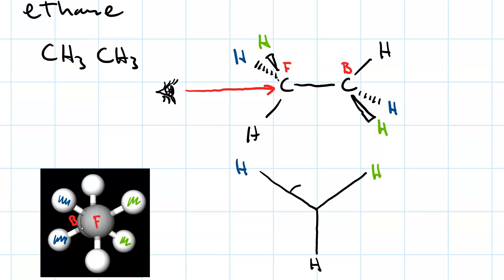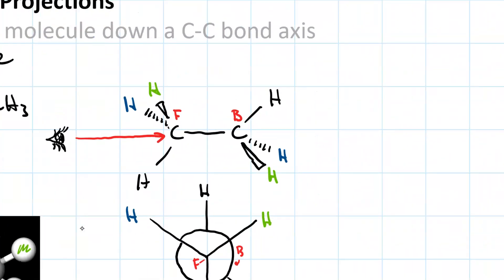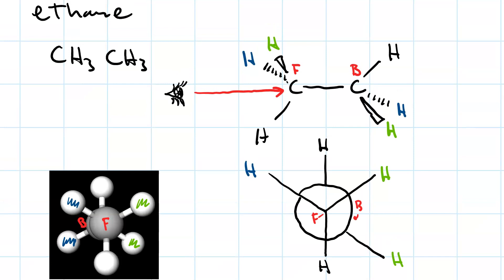For my back carbon, we're going to draw a circle — that's my front, and the circle is the back carbon. The hydrogen going straight up and back is here. The hydrogen going down and to the right is in green. The hydrogen going down and to the right and away from you — draw that in blue. This hydrogen here.